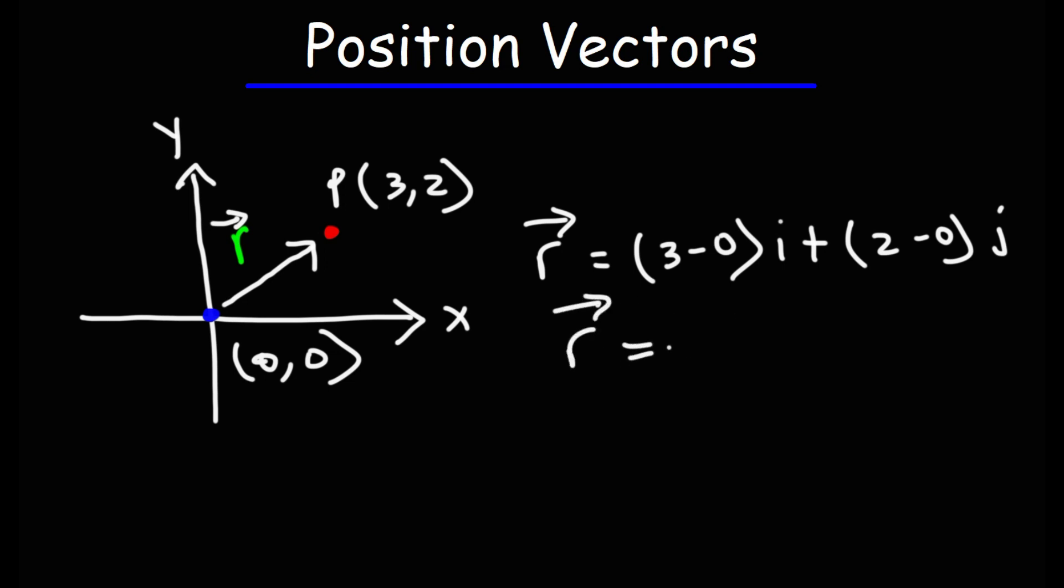So the position vector for this example is 3i plus 2j. So this is the x component and this is the y component of the position vector. And you can see that visually. To go from the origin to point P we need to travel three units along the x direction and two units along the y direction. And so we can see why it's 3i plus 2j.